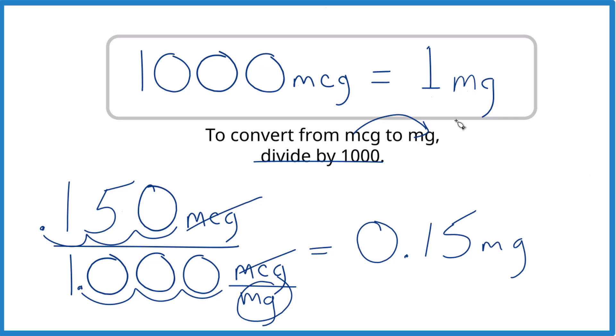So when you go from micrograms to milligrams, like 150 mcg to milligrams, divide by 1,000. If you use your units, they'll cancel out. You'll be left with 0.15 milligrams.